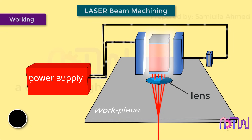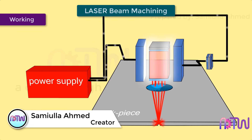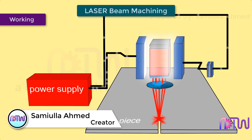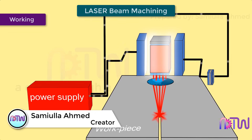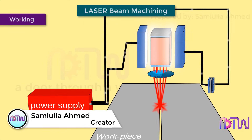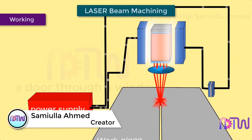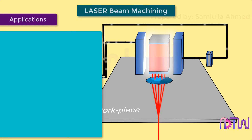A lens is then used to focus the laser beam onto the workpiece to be machined. The interaction of the laser and workpiece produces a large amount of heat, vaporizing the surface of the workpiece and cutting grooves of various shapes or cutting through the workpiece entirely.